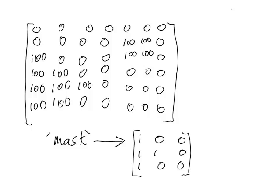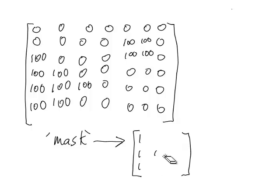Finally, I want the total value of all of the pixels in my mask to add up to something that's close to 0. So all of these values that are 0, I'm going to replace them with values of negative 1. Now the total value of the pixels in my mask adds up to almost 0.